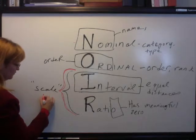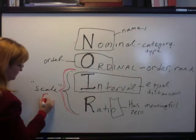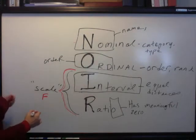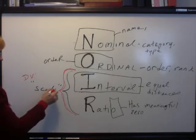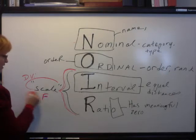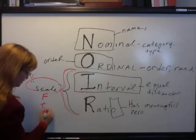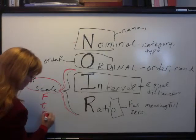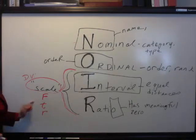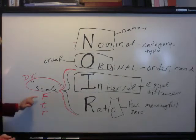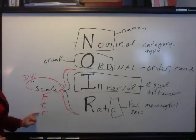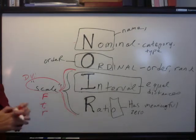For the DV, it has to be a scale variable if you want to do an F test, a T test, or compute an R, because equal distances between items matter in these computations.